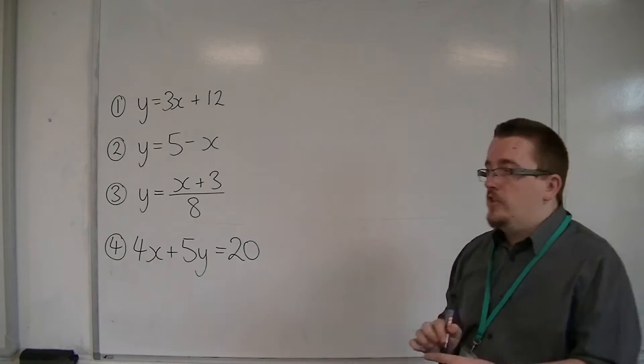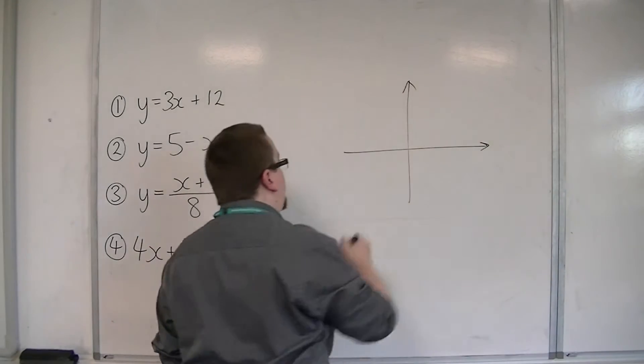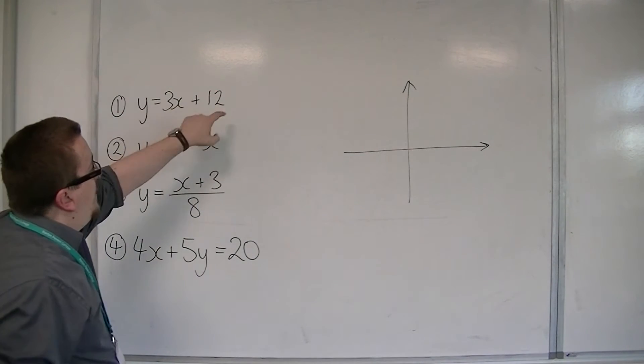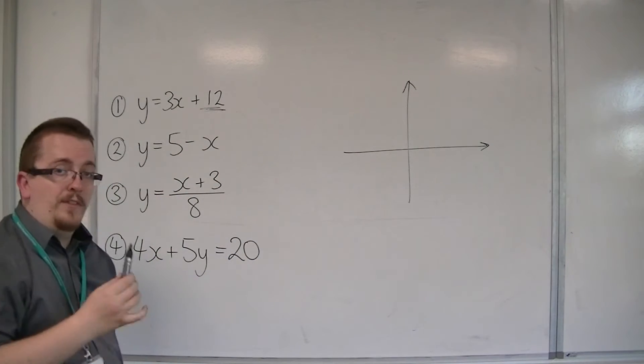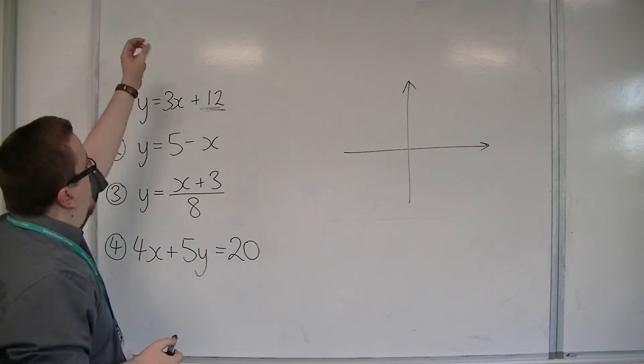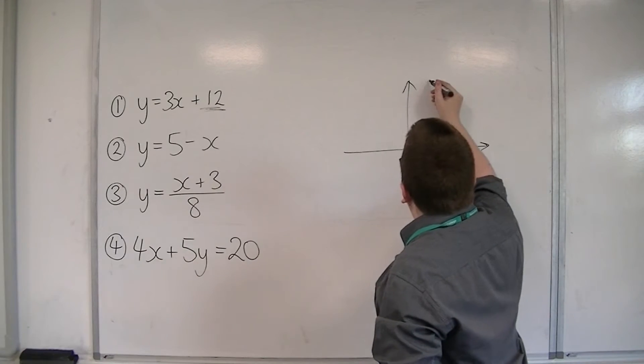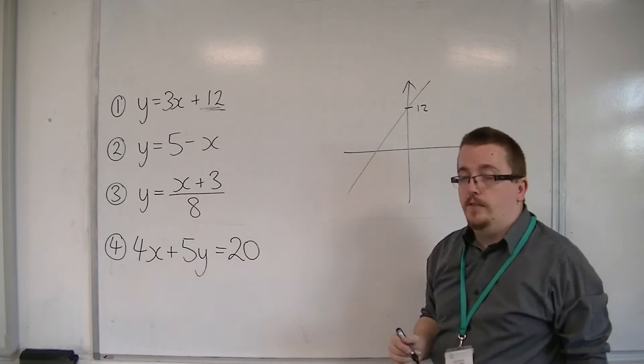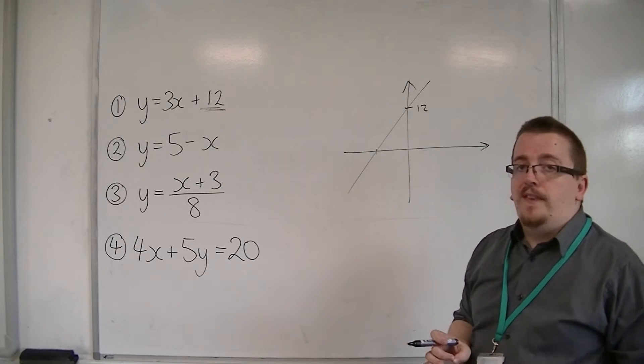y is equal to 3x plus 12. So let's draw some axes. What we should be able to identify is that because it's crossing through the y-axis at 12, because that's the y-intercept there, and it's got a positive gradient, that must mean that the line must look something like this, going through 12 on the y-axis. What we need to identify is where it's crossing the x-axis.